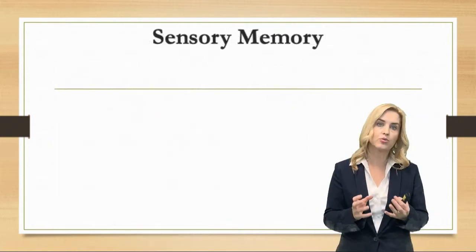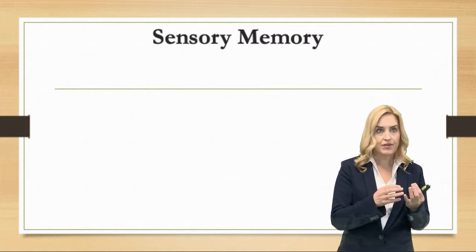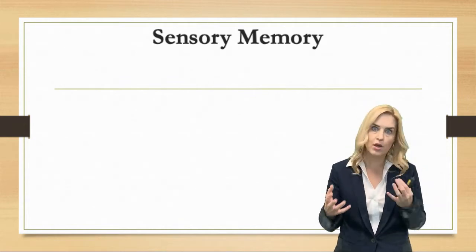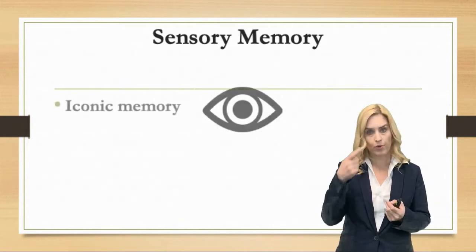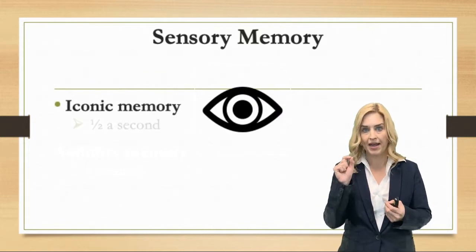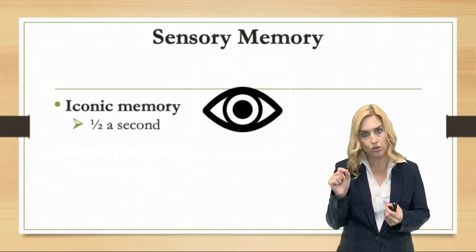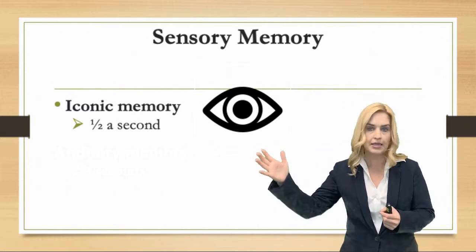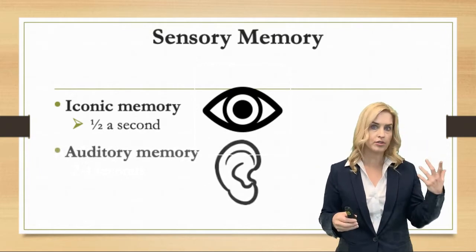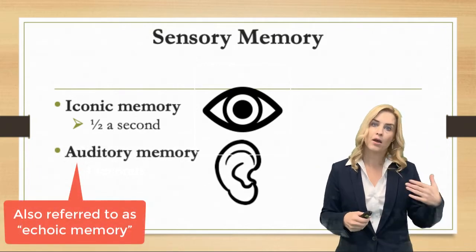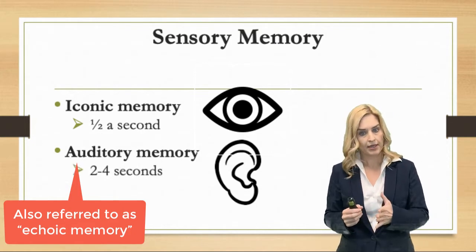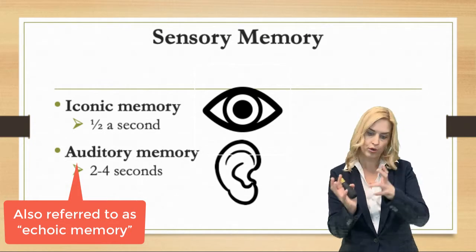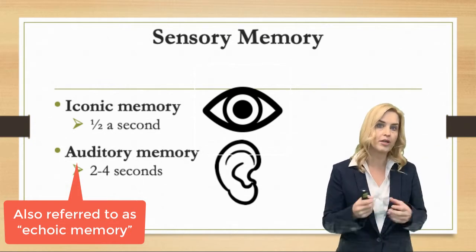With our sensory memory, the duration is a half a second to about two to four seconds, depending on what sense we are working with. With iconic memory — our eyes — we have about a half a second duration, and if we don't pay attention and move that information to working memory, it's lost. With auditory, also called echoic memory, it lasts about two to four seconds, so we have that window to move it into working memory before it's lost.